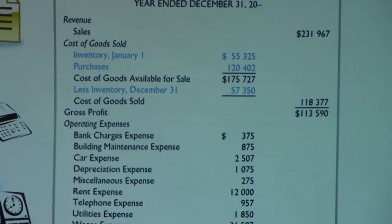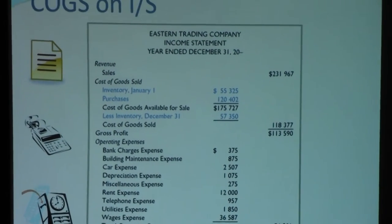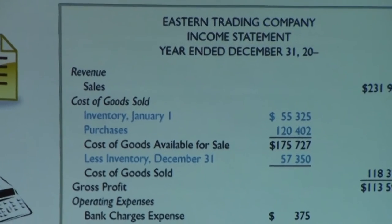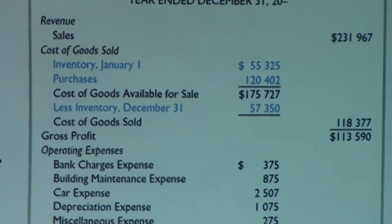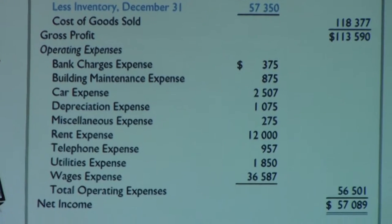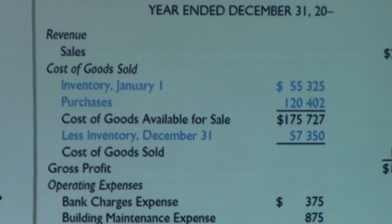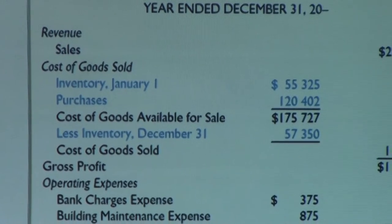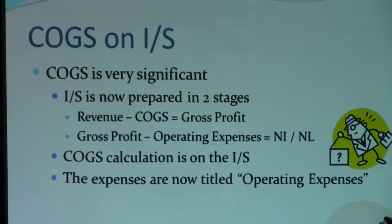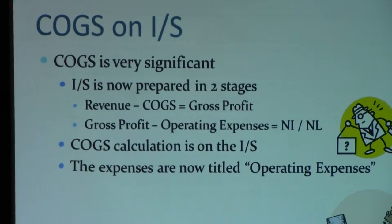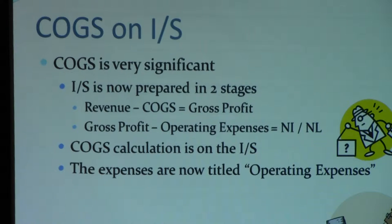Where is inventory shown on the income statement? We now have a new section called cost of goods sold. You have a revenue account, then the cost of goods sold section, then the gross profit line, then operating expenses. Expenses have been broken into two kinds: cost of goods sold and operating expenses. The final number will be either a positive net income or, if negative, a net loss. COGS is very significant for the income statement because it helps you understand how much profit you have left after accounting for the cost of items in inventory that you've been selling. The income statement is now prepared in two stages: revenue minus COGS equals gross profit, then gross profit minus operating expenses equals net income.